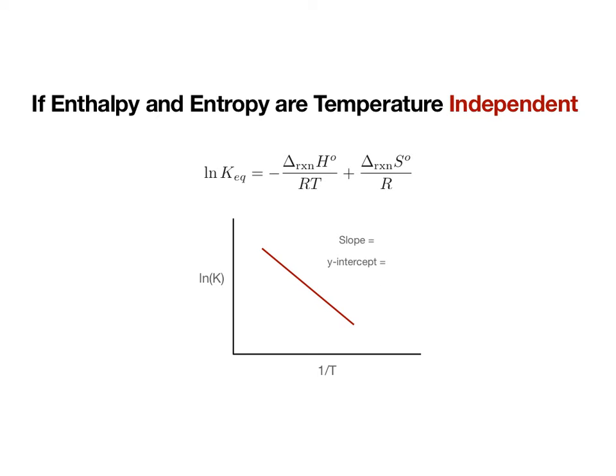So if enthalpy and entropy are temperature independent, so that means that really we are working over small temperature ranges, we can turn this combined equation into a graph where we put the natural log of K_eq on the y-axis, and we put 1 over the temperature on the x-axis, and we get a line. And what this means is that the slope is going to be equal to delta H over R, and the intercept is going to be equal to delta S over R. And so if we can measure this equilibrium constant at various temperatures, we are going to be able to extract out the delta H and the delta S, and thus delta G from this reaction.